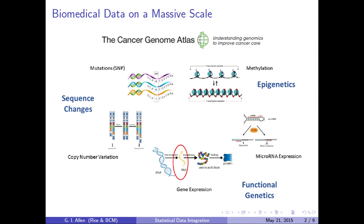For every single type of tumor sample, there are multiple types of molecular profiling that are run — think somatic mutations, gene expression, microRNA expression, methylation arrays — all of these different components are part of the same biological system. But currently, in statistics and machine learning, we often take one of these individual data sets and analyze them separately, for instance analyzing gene expression separately from copy number variation.